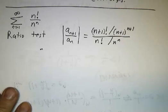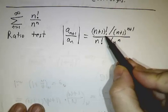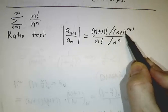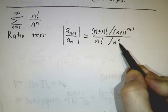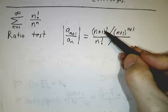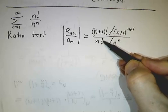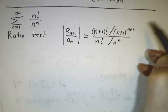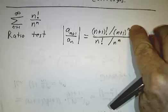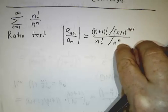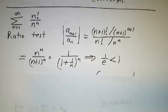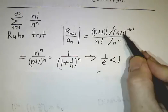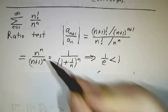With the ratio test, you take the ratio of successive terms. The (n+1)st term is (n+1)! over (n+1)^(n+1), divided by n! over n^n. A lot of things cancel: (n+1)! divided by n! is (n+1), and that cancels one of the powers of (n+1) in the denominator, so you have n powers of (n+1) over n powers of n. We're dividing by n^n over n!, so it winds up upstairs; n^n winds up downstairs.